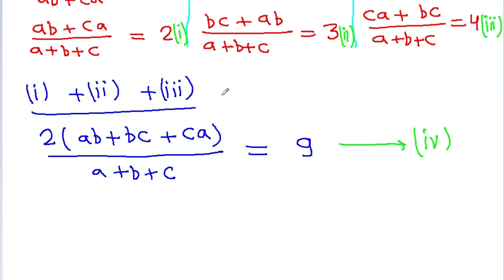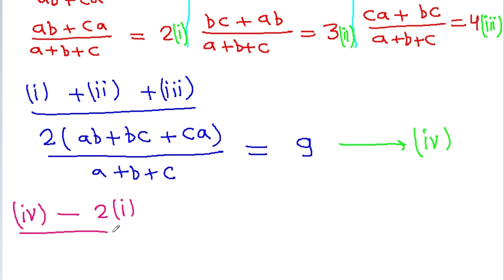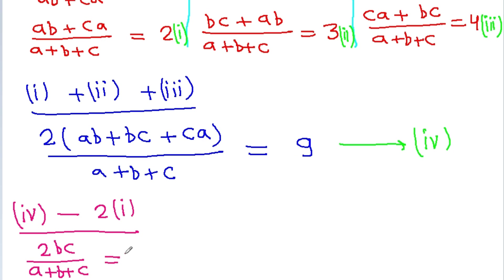Now if we compute equation 4 minus 2 times equation 1, then 2ab and 2ca cancel out, and we get 2 times bc by a plus b plus c is equal to 9 minus 4, which is 5.